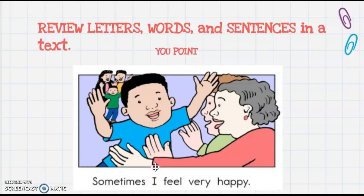Now I want you to point to a word for me. If you've pointed to a single word like feel, very happy, or sometimes, good job — that is a word. Now I want you to take your finger and underline the whole sentence. If you went like this, very good job. Multiple words come together to make a sentence and the words are separated by white space. You'll notice my sentence starts with a capital letter and ends with a period.